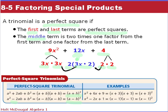It's going to factor into (A + B)². When the B term is negative, it factors into (A − B)². There are two examples here you can look at. So x² is a perfect square and 9 is a perfect square; x² here is a perfect square and 1 is a perfect square — so those are perfect square trinomials.